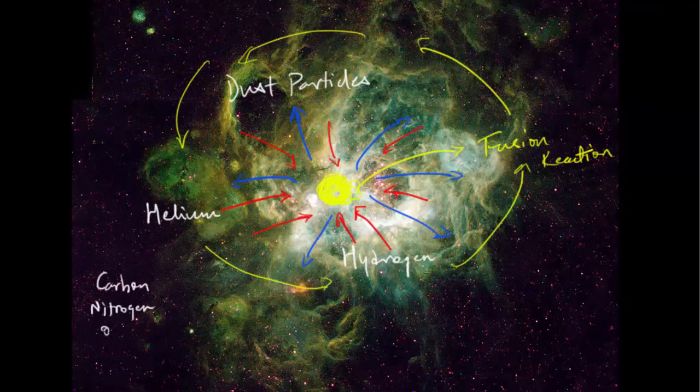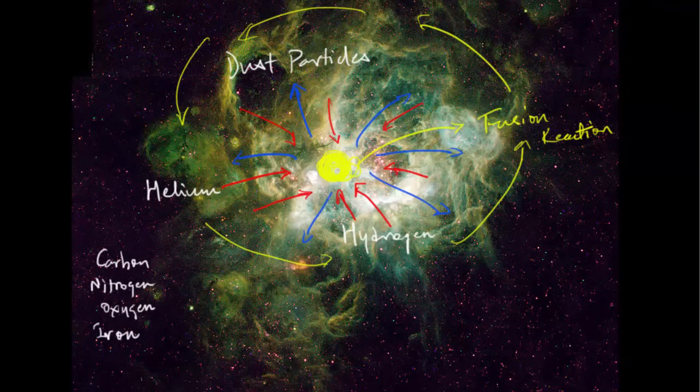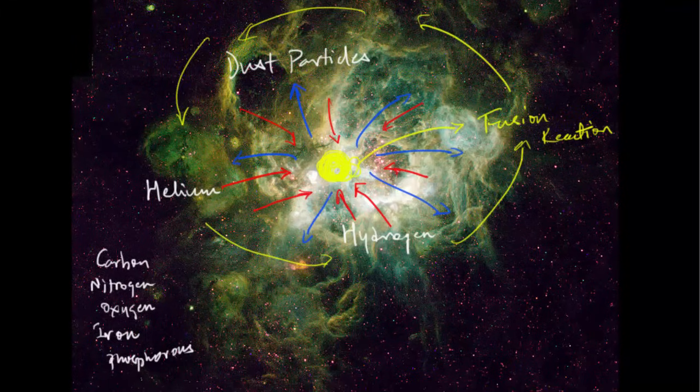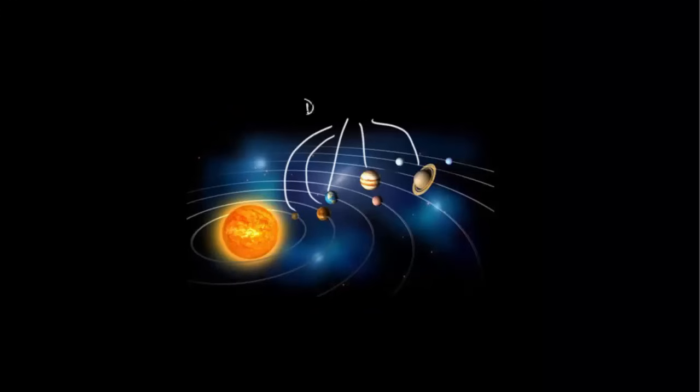The heavier elements like carbon, oxygen, nitrogen, iron, phosphorus, silicon, etc. moved away from the center. And if you see, the Earth and all other planets are made out of denser elements than stars.